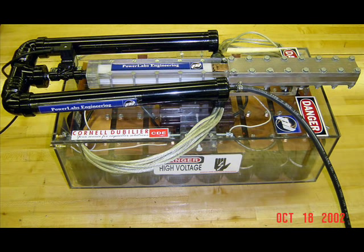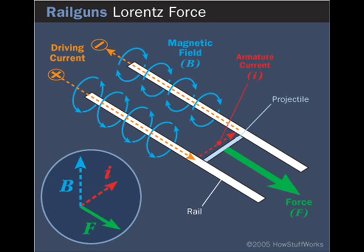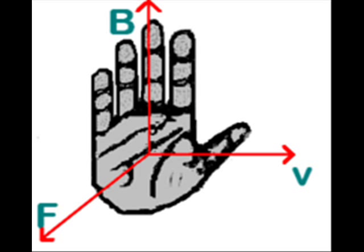Now we will move on to another form of particle accelerator: the rail gun. The rail gun works on a similar principle, but instead of using coils to attract a piece of ferromagnetic material, it uses two bars of conducting material — usually copper — and Lorentz's law to propel the projectile out of the barrel. Lorentz's law, i.e. the right hand thumb rule, says that with the thumb pointing in the direction of conventional current (the positive charge) and the fingers pointing in the direction of the magnetic field, the palm of the hand gives the direction of the force.